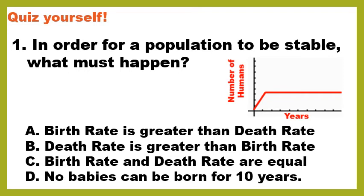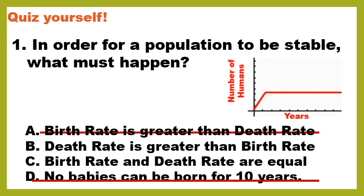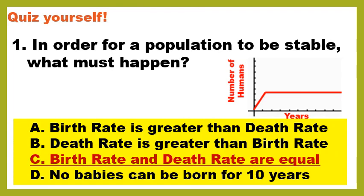Let's end with a quiz: in order for a population to be stable or stay the same, what must happen? A) birth rate is greater than death rate; B) death rate is greater than birth rate; C) birth rate and death rate are equal; or D) no babies can be born for 10 years. The correct answer is C — birth rate and death rate are equal, so you have an equal number of people coming in with birth and going out with death.